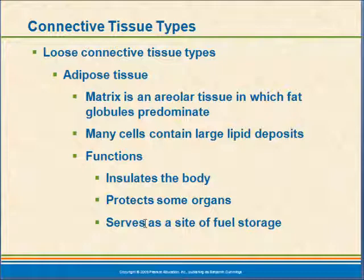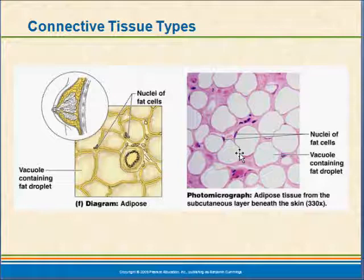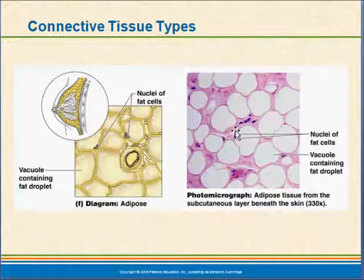The downside is that when we store these lipids, it is difficult to get them back out of storage, as anybody who has been on a diet can attest to. The look of this connective tissue is large globules of lipids. This looks a lot like some of our simple squamous epithelium from certain viewpoints, but one difference is there are no visible nuclei in the center of the cell — the nuclei are off to the side.